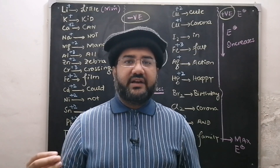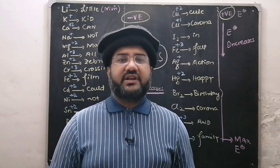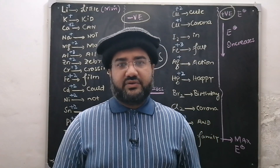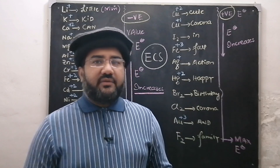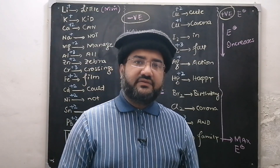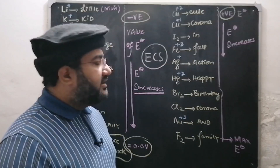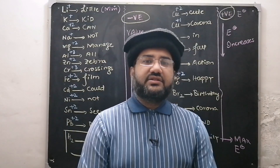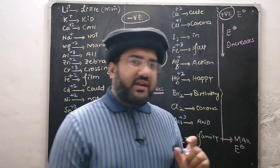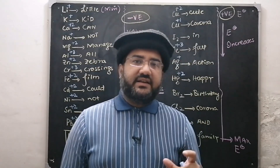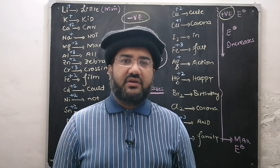The electrochemical series is made on the basis of standard reduction potential. Standard conditions for calculating the electrode potential of any element include: temperature 298 Kelvin, pressure 1 atm, concentration of ions in solution 1 molar, and the electrode potential is calculated on the hydrogen scale using the reference electrode, which is the standard hydrogen electrode (SHE).